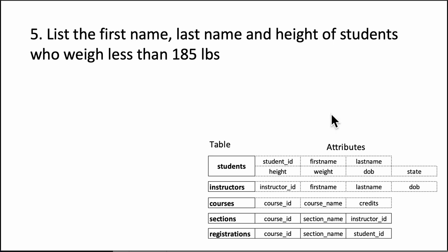In this question, we are looking at something which is only slightly different from question number 4. So this time, once again, we are saying list the first name, last name and height of students who weigh less than 185 pounds.